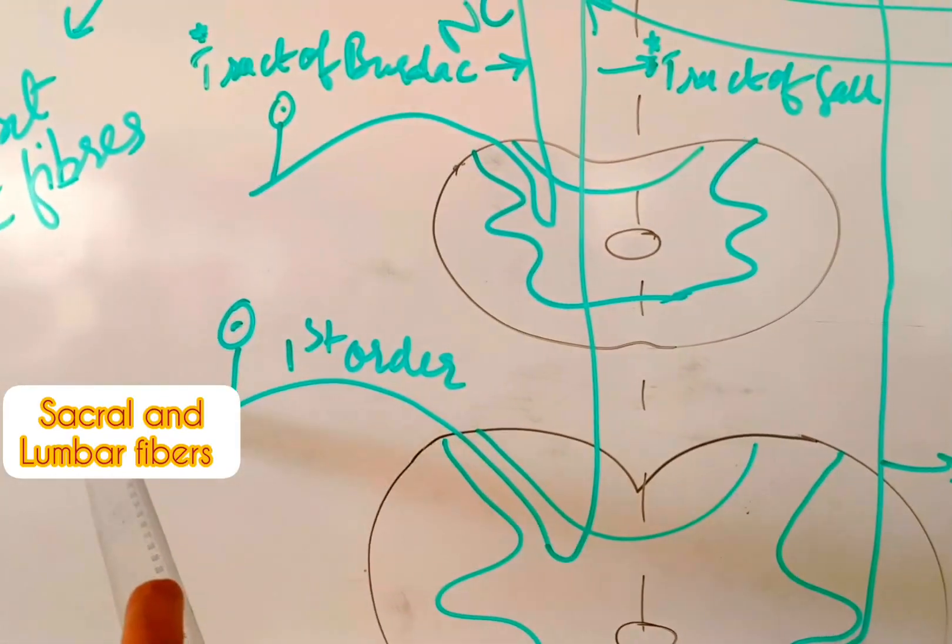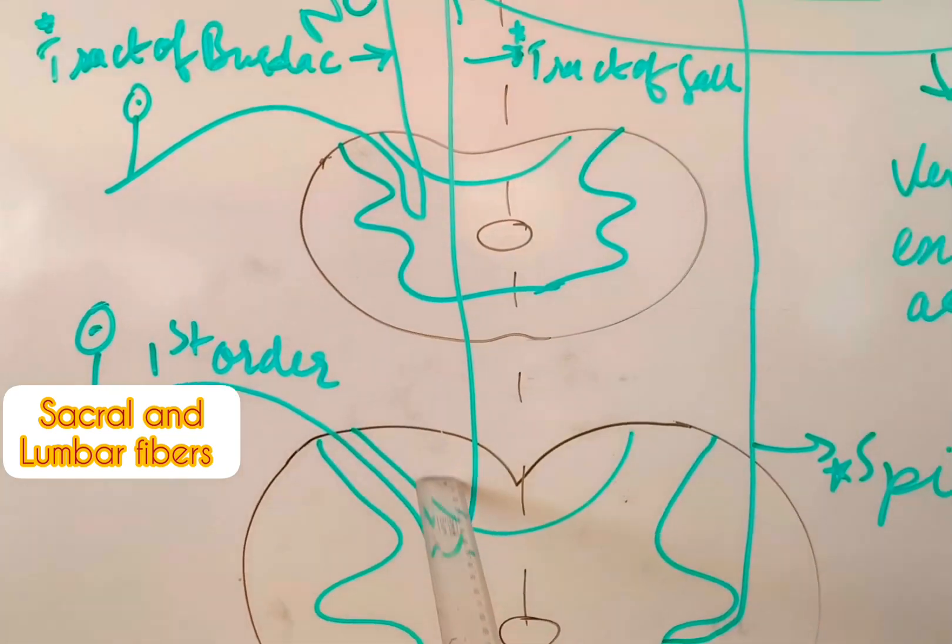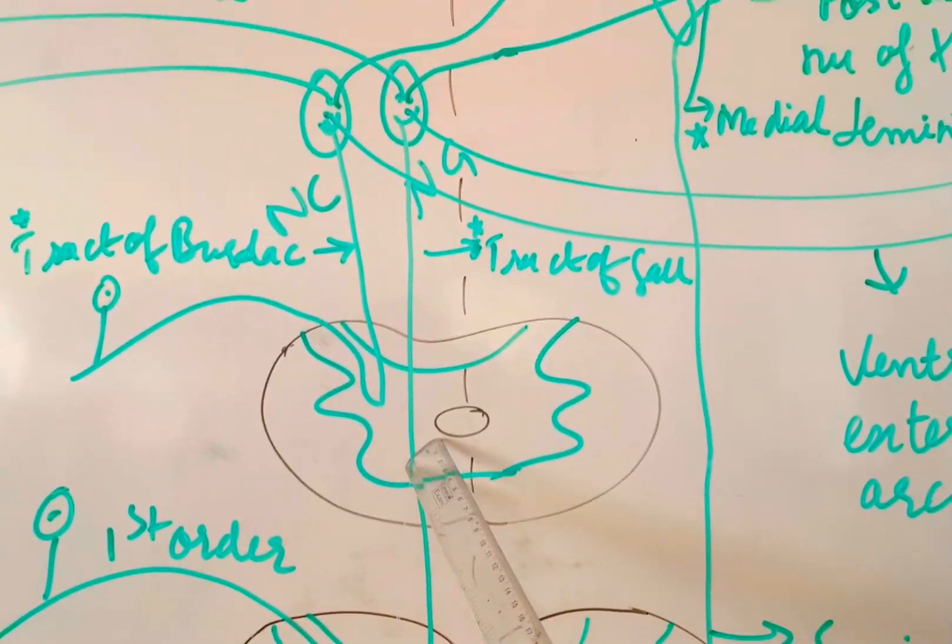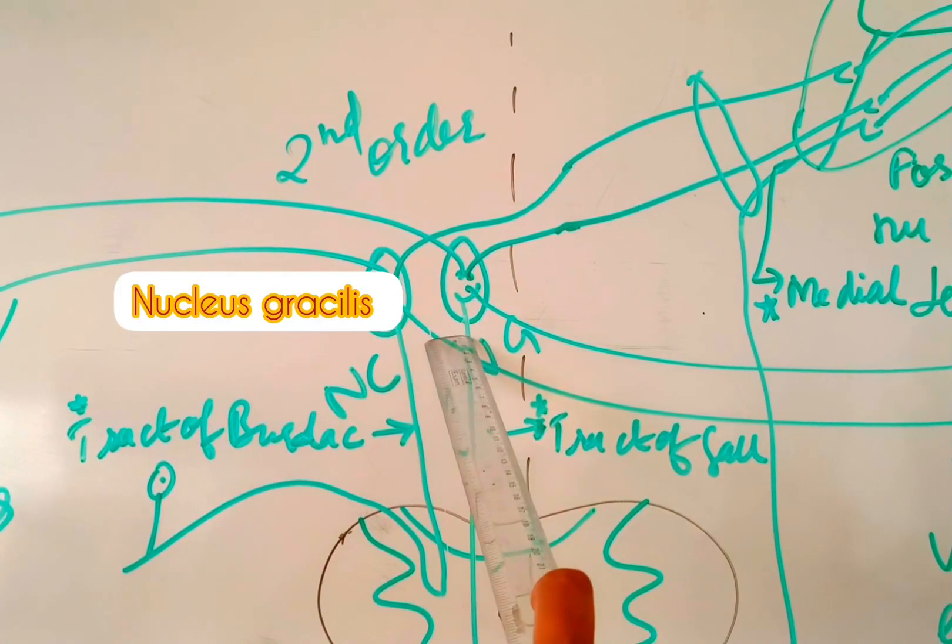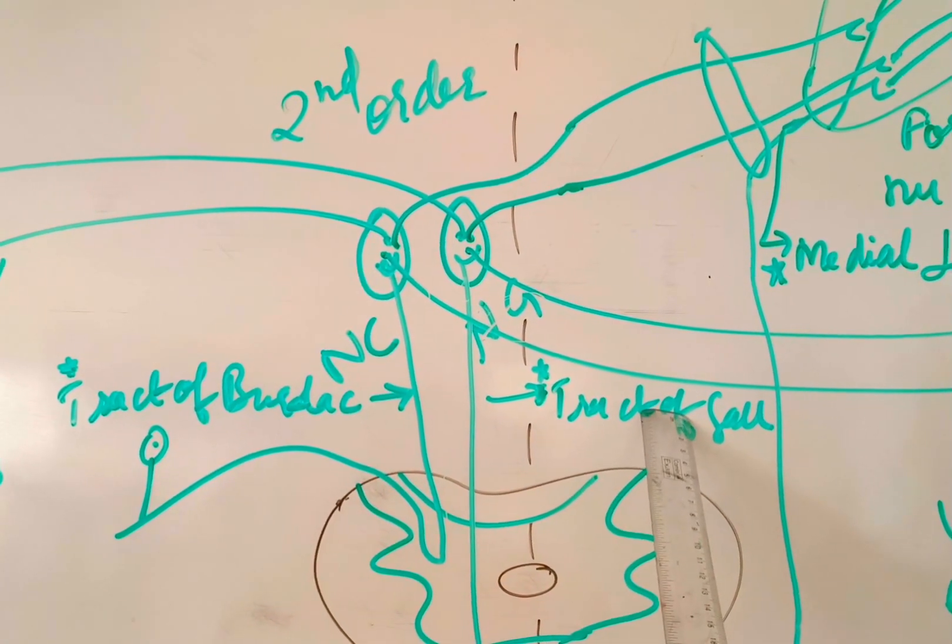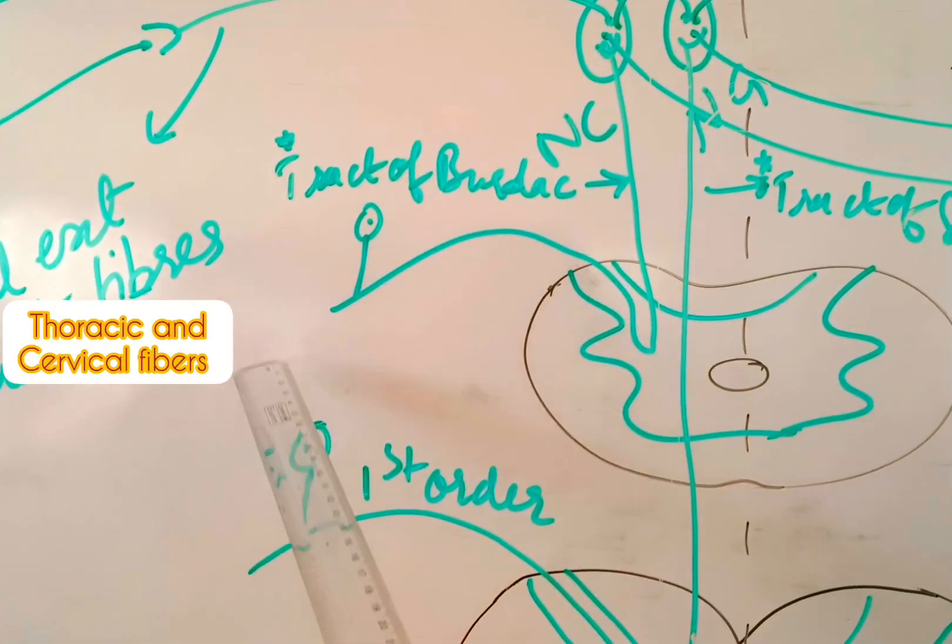These are the sacrum and lumbar fibers. They form the first order of neuron in the dorsal root ganglion. These fibers ascend upwards and synapse with the nucleus gracilis, and the name of the tract is tract of Goll.